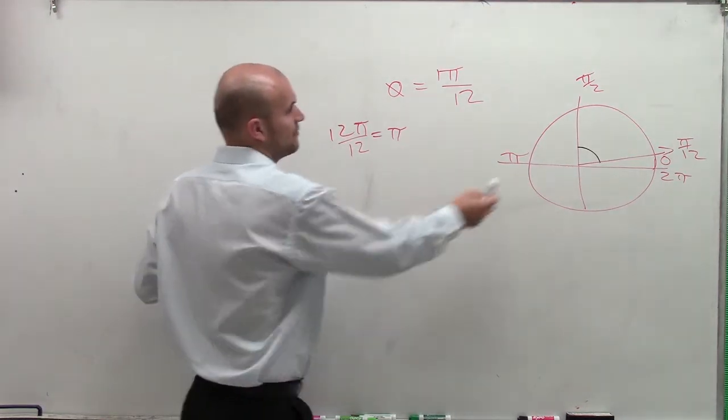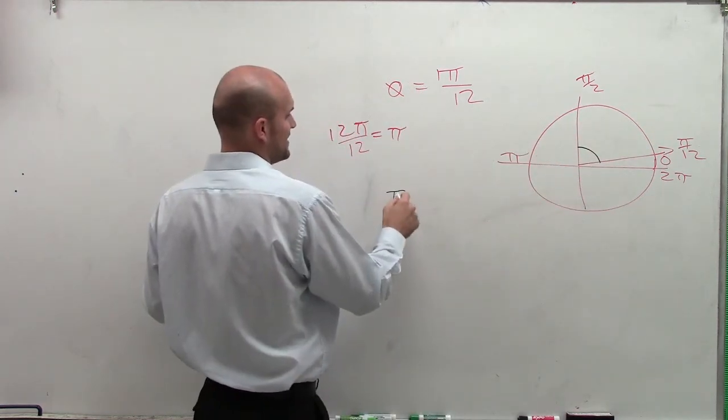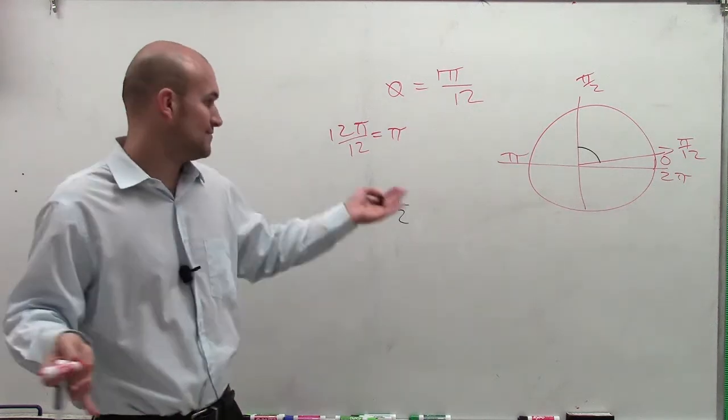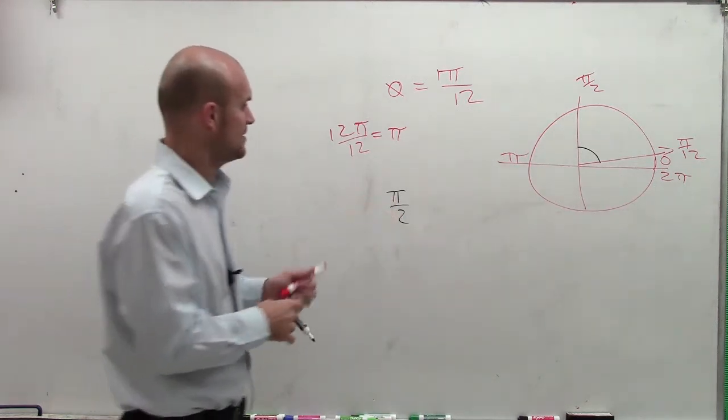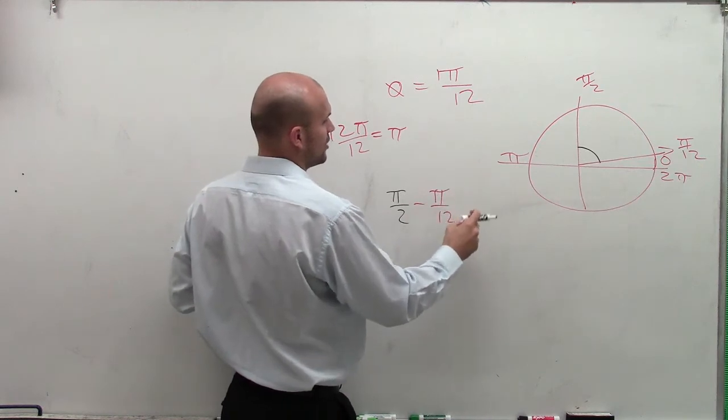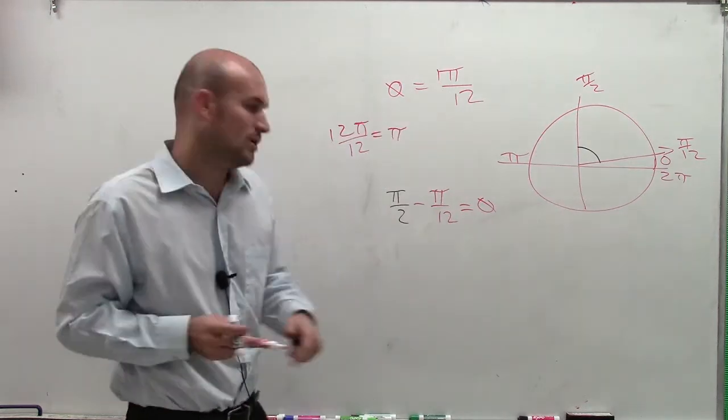So what I'm going to do is if I say, well, halfway around is going to be pi over 2, if I take pi over 2, because remember, two complementary angles add to give you pi over 2, or 90 degrees. So pi over 2 minus pi over 12 is going to equal my angle theta, that will be complementary to pi over 12.